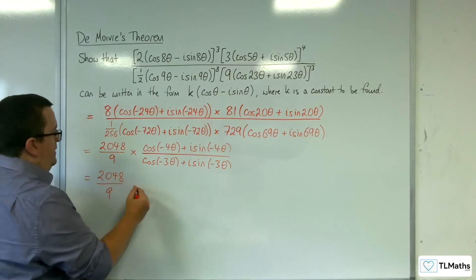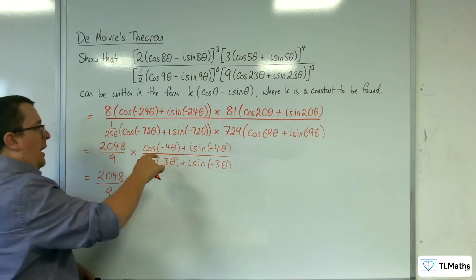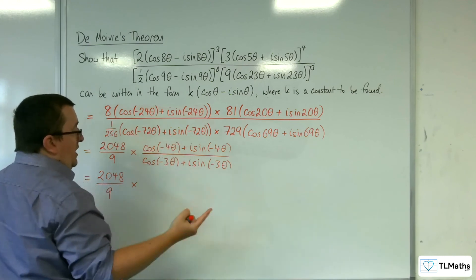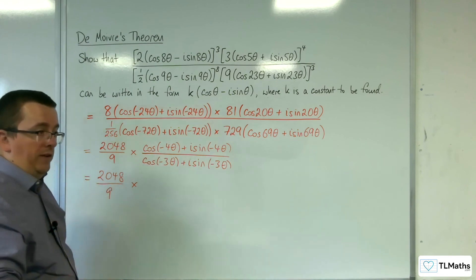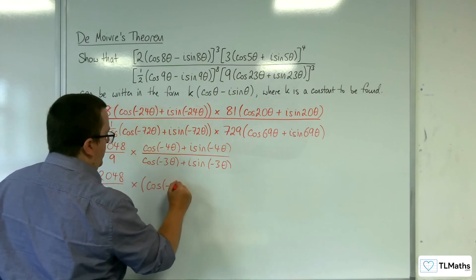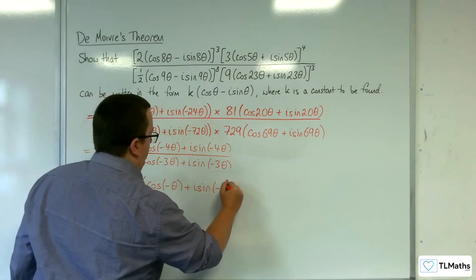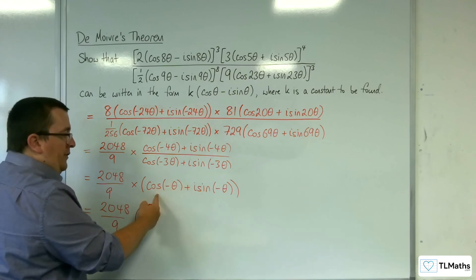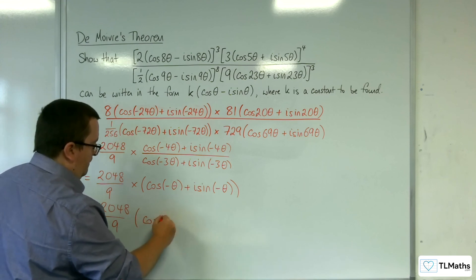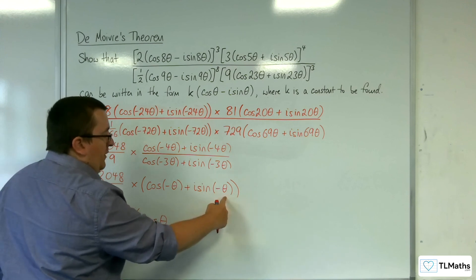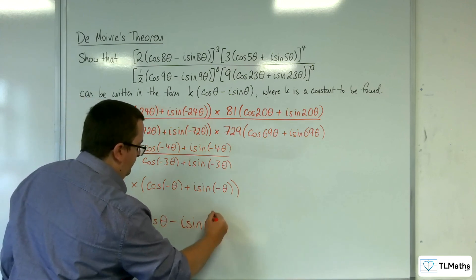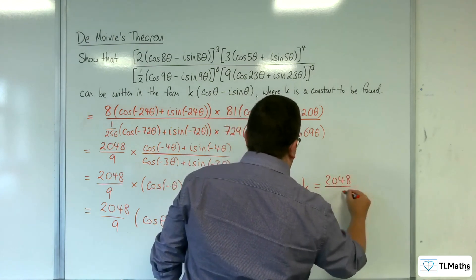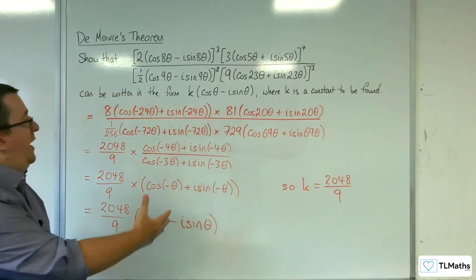Because you're dividing one complex number by another, you subtract the arguments. So minus 4 theta take away minus 3 theta leaves you with minus theta. So cosine of minus theta plus i sine of minus theta. Now, because cosine is even, cosine of minus theta is just cosine of theta. And sine being odd, i sine of minus theta is the same as minus i sine theta. So it is in the correct form, and k is 2048 over 9.